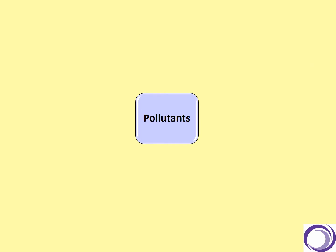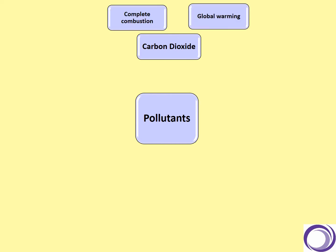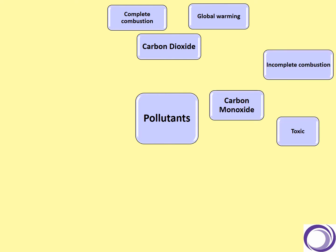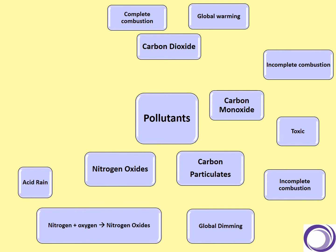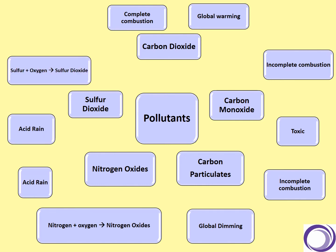Let's go through a quick summary of those pollutants. Carbon dioxide is caused during complete combustion and is linked to global warming. Carbon monoxide is formed during incomplete combustion and is toxic. Also formed during incomplete combustion are carbon particulates, which are linked to global dimming. Nitrogen oxides form when nitrogen and oxygen from the air react inside the engine and are linked to acid rain. Sulphur dioxide is formed when sulphur impurities react with oxygen in the engines and is also linked to acid rain.